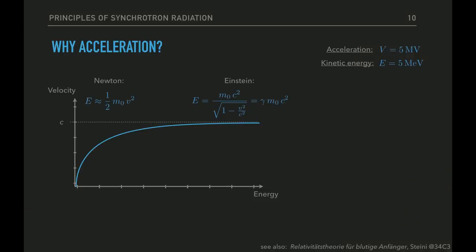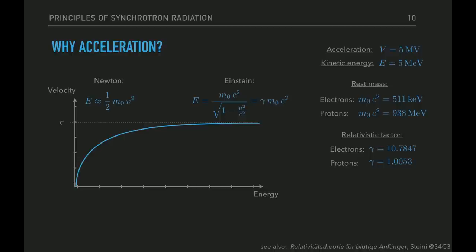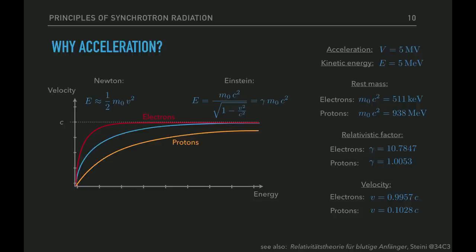Let's assume we accelerate an electron and a proton with five million volts — five megavolts. The kinetic energy of both is five mega electron volts. The rest mass of an electron is about 500 keV, while for a proton it is about two thousand times more. The gamma factor is about 10 for electrons and about 1 for protons. Electrons accelerated with five million volts travel at 99.5% of the speed of light, while protons only travel at ten percent. Electrons and protons, or in general light and heavy particles, have very different relations between energy and velocity. In synchrotron light sources we always want very high gamma, so we only use electrons.